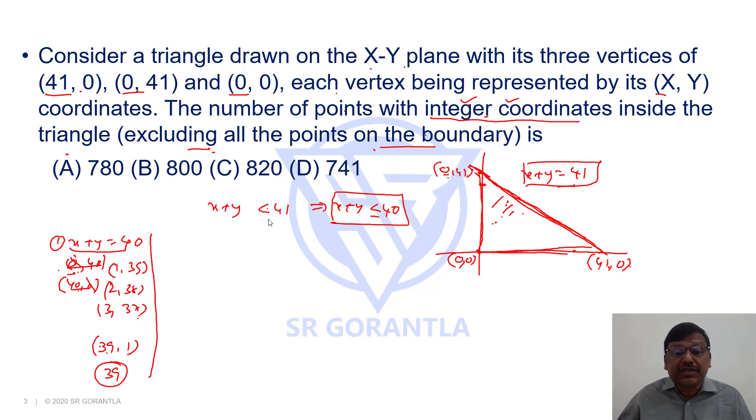What if x + y = 39, because it is ≤ 40? If x + y = 39, again we can't take x or y = 0 because once you take 0 it will be on the boundary. So x and y cannot be 0 means it should be x is minimum 1 then y is 38, x is 2, y is 37.